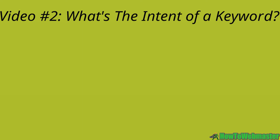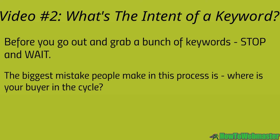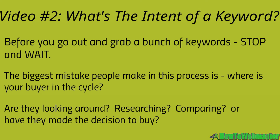Welcome back. This is video number two and we are going to talk about the intent of a keyword. Before you go out and grab a bunch of keywords, stop and wait — the biggest mistake people make in this process is not really knowing where your buyer is within the buyer's cycle. When you look at a keyword, think: why is somebody typing in this keyword? Are they researching? Are they comparison shopping? Or are they buying? Do they really know what they're buying, or do you need to get them through the stages of researching, comparing, and then buying?